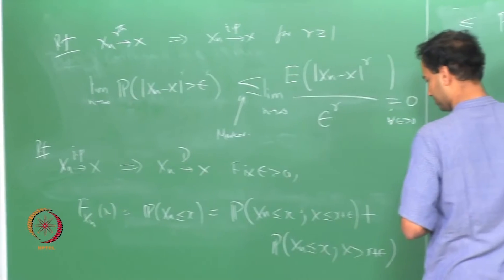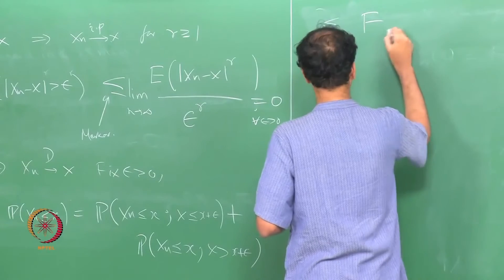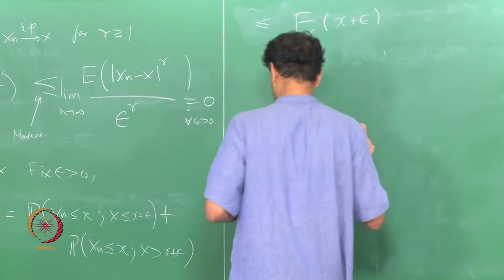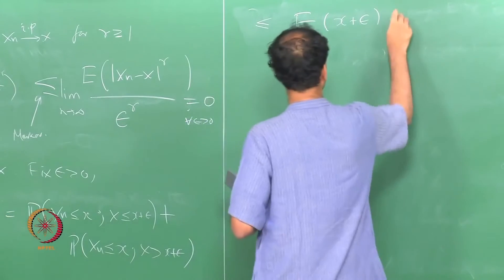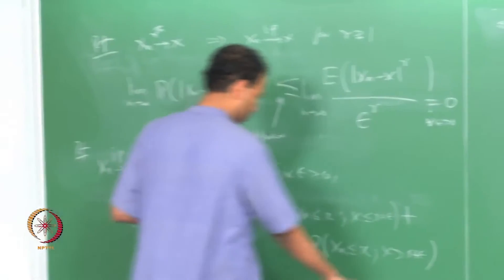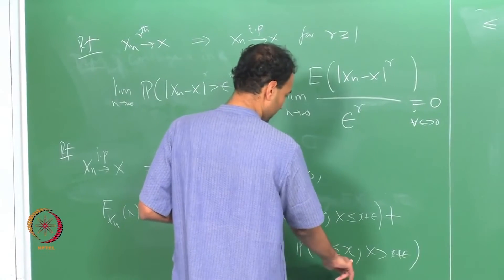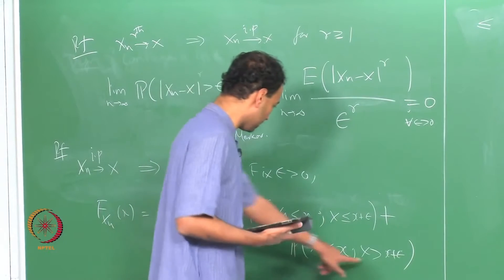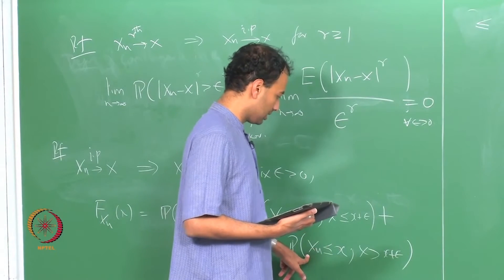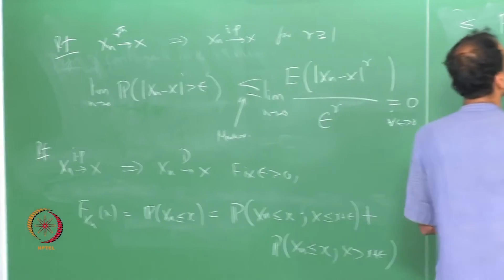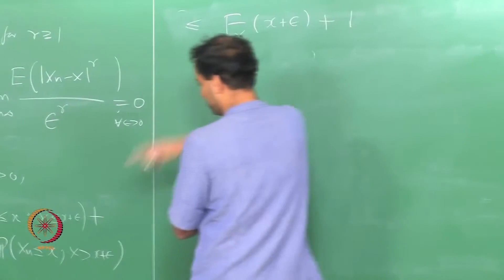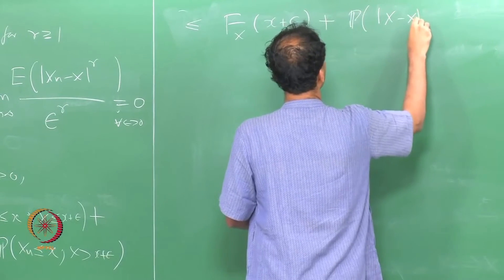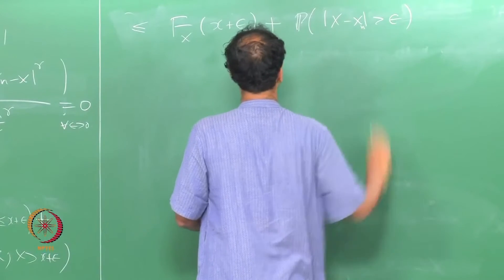This is less than or equal to F(X plus epsilon), plus — for this event — you are saying X_n ≤ X but X > X plus epsilon, which necessarily implies the difference between X_n and X is greater than epsilon. So that is an upper bound.